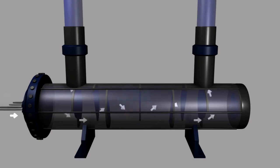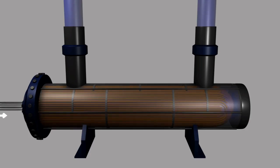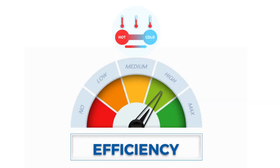The baffle plates inside the shell cause the fluid to flow in a serpentine pattern, increasing the amount of time the fluid spends in contact with the tubes and maximizing the heat transfer efficiency.